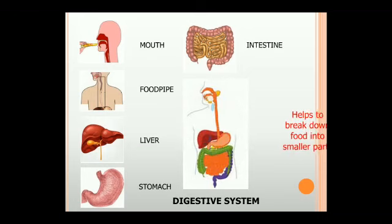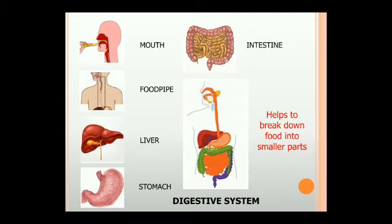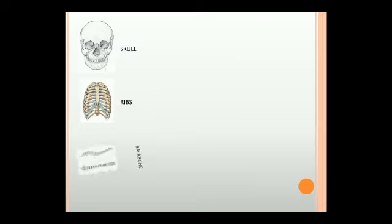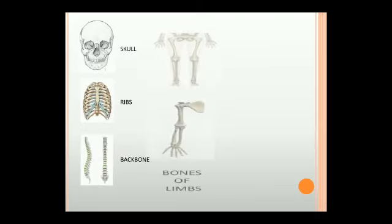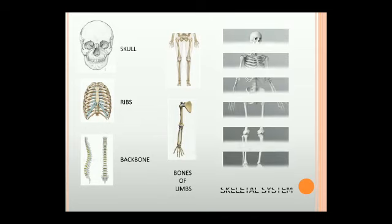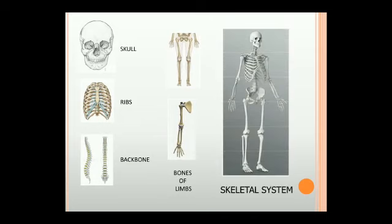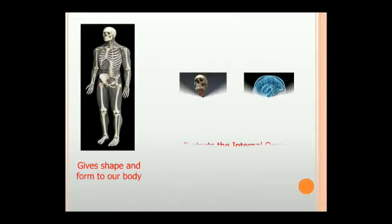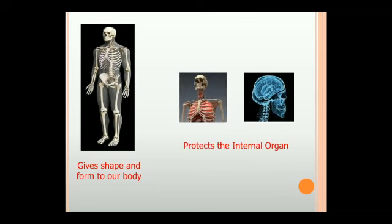Our digestive system helps to break down food into smaller parts. Different types of bones like the skull, ribs, backbone, and the bones of limbs make up the framework inside our body and form the skeletal system. Our skeletal system gives shape and form to our body and protects the internal organs.